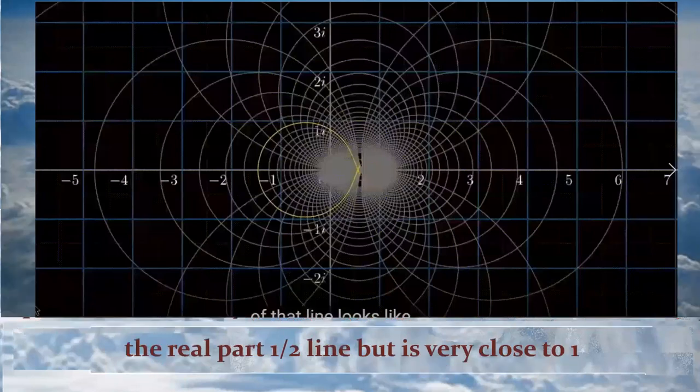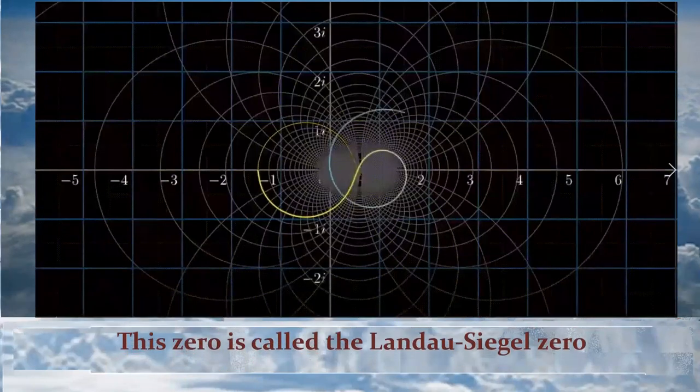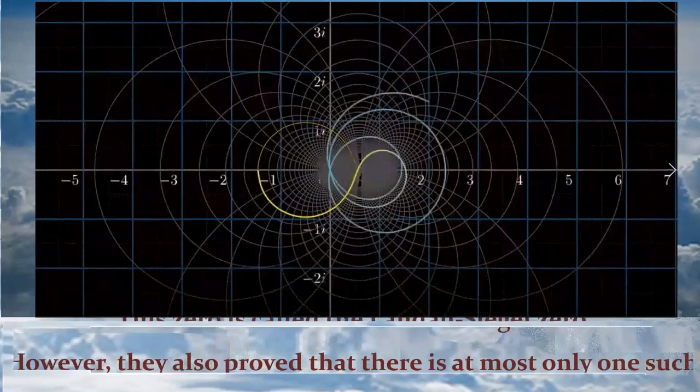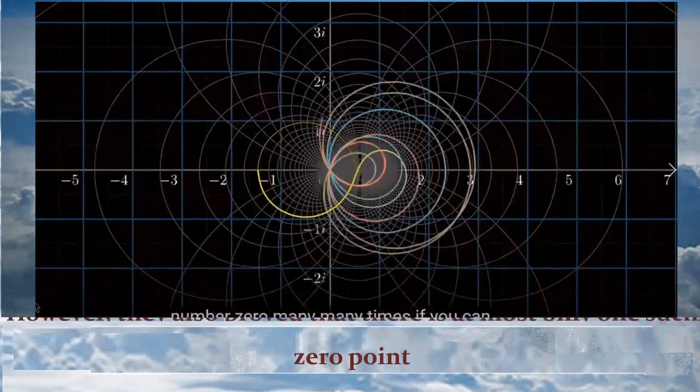This zero is called the Landau-Siegel zero. However, they also proved that there is at most only one such zero point. If Siegel zero really exists, the generalized Riemann hypothesis is wrong.